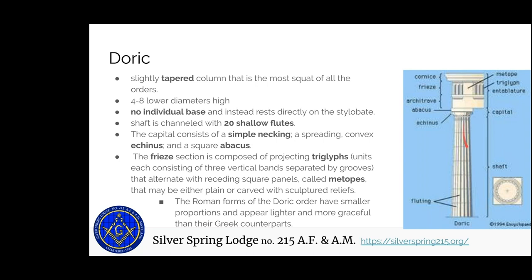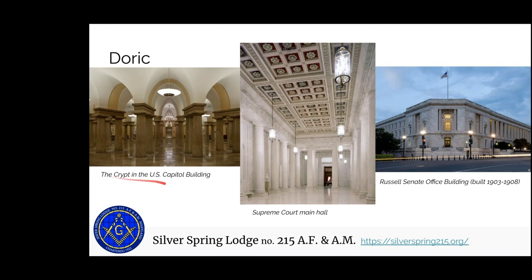You can see the narrow fluting on the shaft, the abacus, the echinus, and then the cornice at the top — the frieze section where you have metope panels that can be carved, the triglyph, and the architrave which is the functional part that sits on it. Examples of Doric columns in the DC area: you have the crypt in the US Capitol building in the basement, where all the columns support the floor above. The Russell Senate Office Building has Doric columns on the outside. The space is called 'The Crypt' because there was discussion of housing George Washington's remains there.